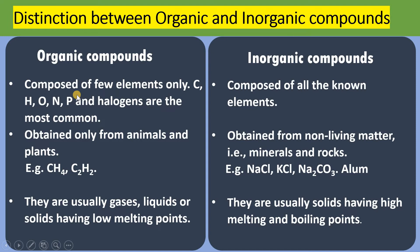Now we will see the distinction between organic compounds and inorganic compounds. Organic compounds are composed of few elements only — limited elements like carbon, hydrogen, oxygen, nitrogen, phosphorus, halogens etc. Whereas inorganic compounds are composed of all elements of the periodic table. Organic compounds are usually obtained from living things like animals and plants, whereas inorganic compounds are obtained from non-living things like minerals and ores.